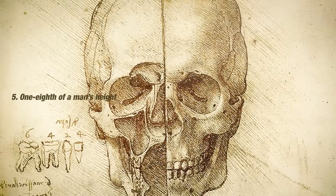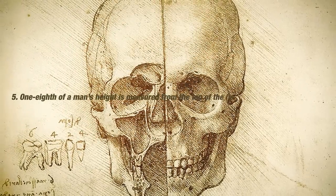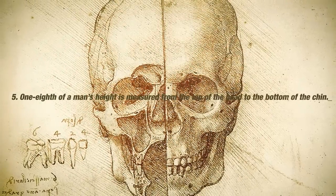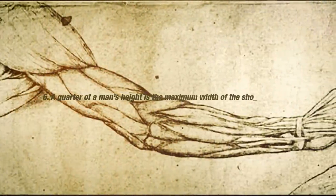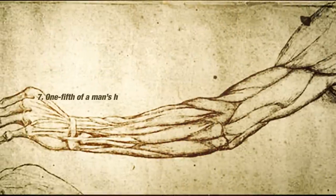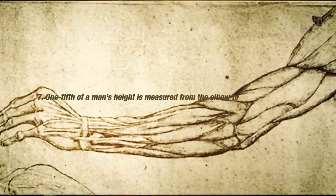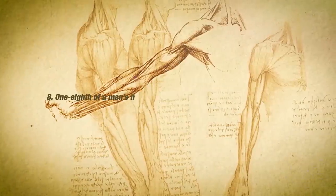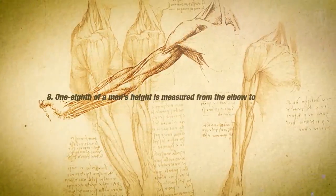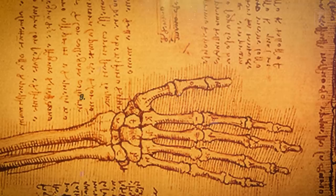Number five, one-eighth of a man's height is measured from the top of the head to the bottom of the chin. Number six, a quarter of a man's height is the maximum width of the shoulders. Number seven, one-fifth of a man's height is measured from the elbow to the tip of the hand. Number eight, one-eighth of a man's height is measured from the elbow to the armpit.